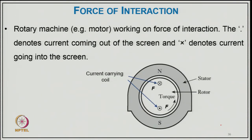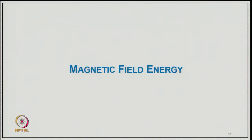In a rotary machine working on the force of interaction, a dot indicates current coming out of the screen and a cross indicates current going into the screen. The pole formation and the developed force depend on this current direction arrangement.